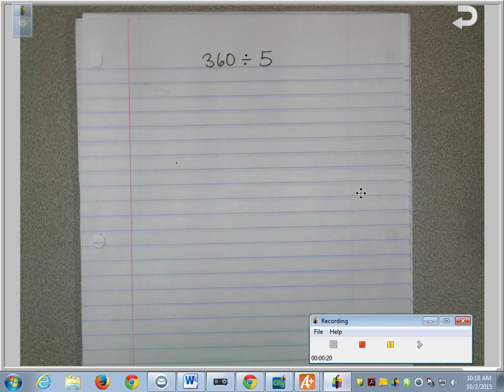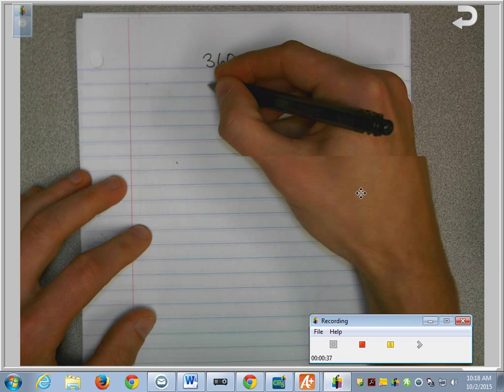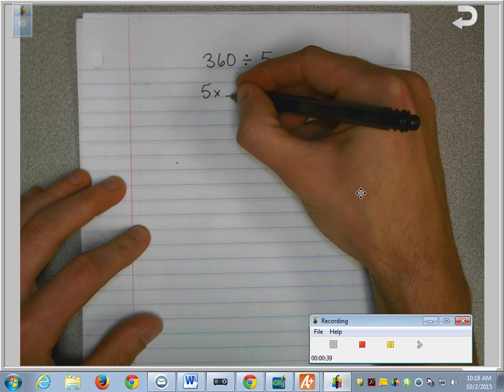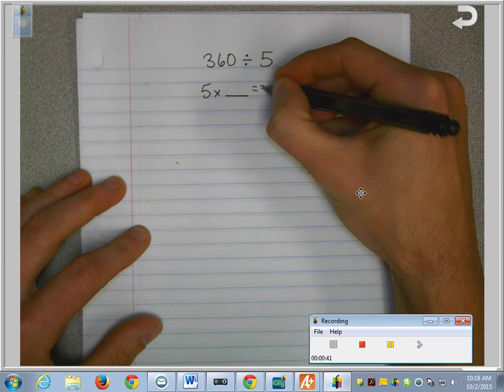The first thing we need to do is to understand that division is really just a reverse multiplication problem. So in this problem, 360 divided by 5, what we're really trying to figure out is how many groups of 5 are in the number 360. In other words, we're trying to figure out 5 times what equals 360.